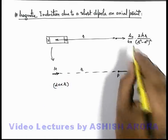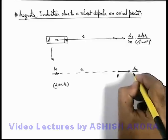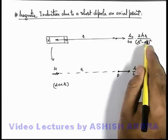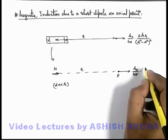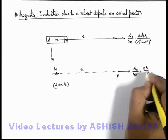In this situation, this can be written as mu_0 over 4π times 2Mr by, and if we ignore d², this will be r to the power 4. So this can be written as 2M by r³.